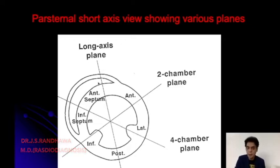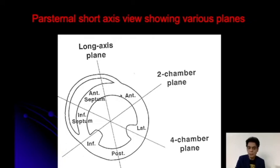You can see this is a short axis view — a two chamber short axis view — and here you can make out this is the left ventricle and this is the right ventricle in the view. This is the interventricular septum. If you see this picture, you will be able to make out that this is the septum. This is anterior, so this is the anterior septum. This is down, so this is the inferior septum, and then this is the free wall.